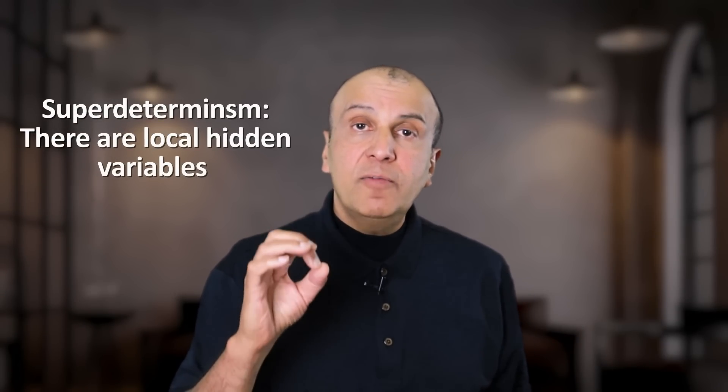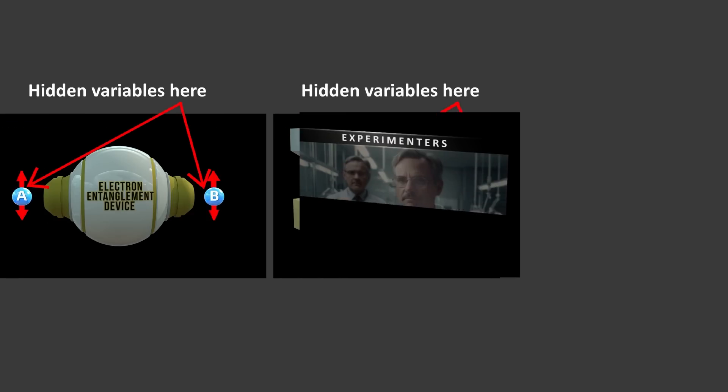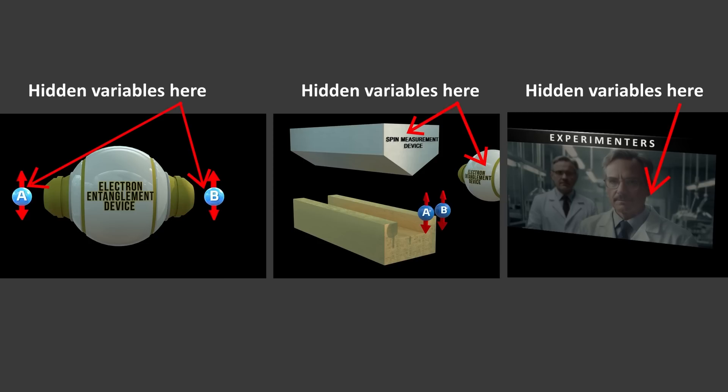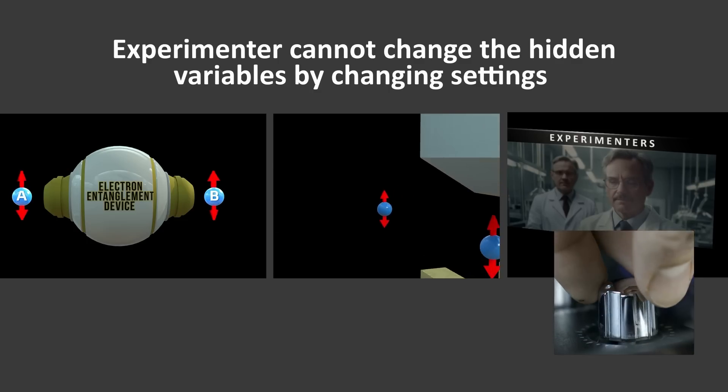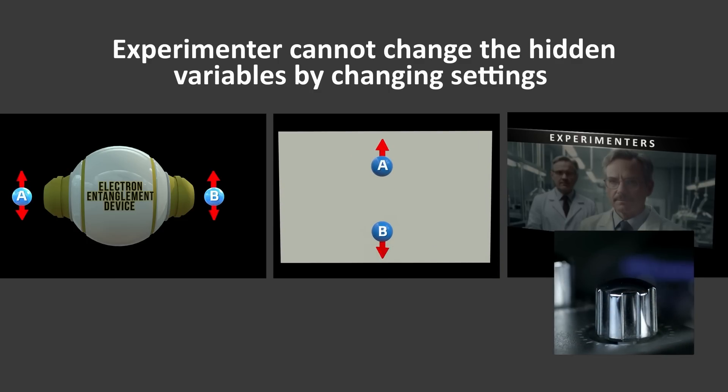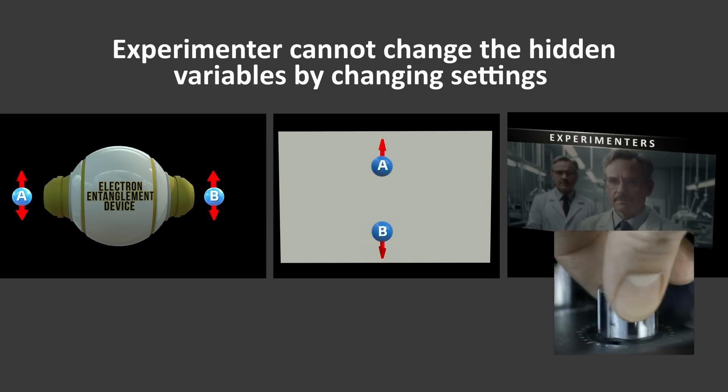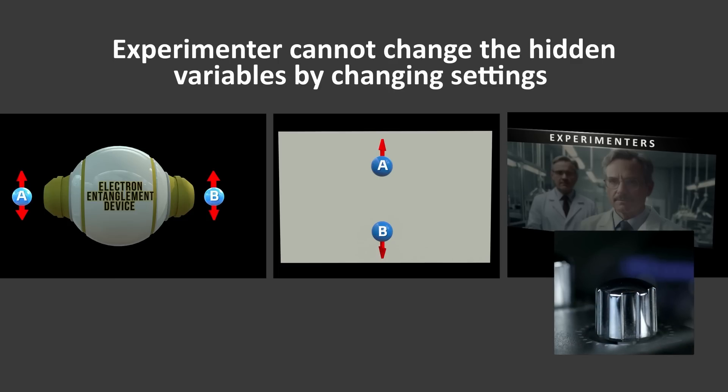But then you have to explain why it seems as if the act of measurement determines those particles properties. The way super-determinism can explain this is by saying that there are hidden variables in the particles, and the detector, and even the person making the measurements that caused the particle to have the results that we found when we measured it. So there is a correlation between the particle's measured properties, and the measurement settings, and the surroundings. Now I am careful with my words here, and I am saying correlation, rather than causation. In other words, the person doing the measuring can't change the setting, and then somehow that would change the hidden variables. There is no causation between the measurement settings and the hidden variables. There is only a correlation. So that is an important point to remember.